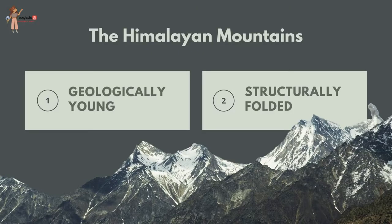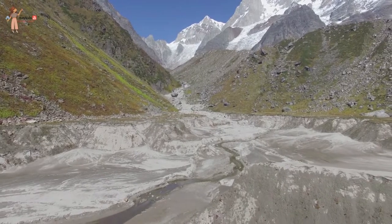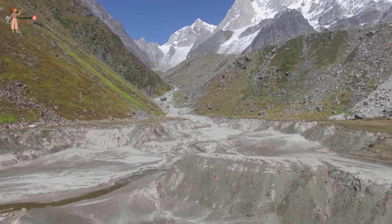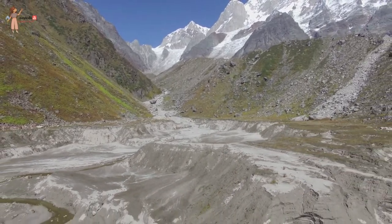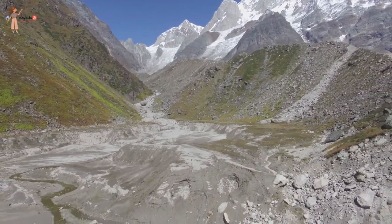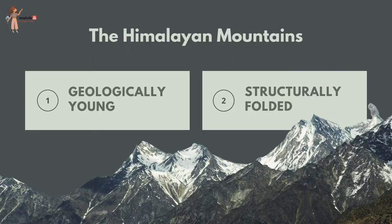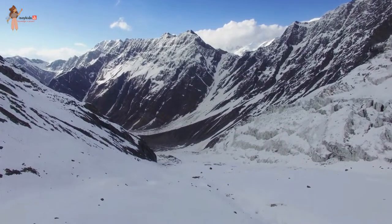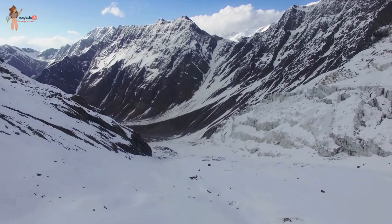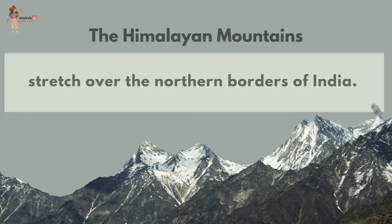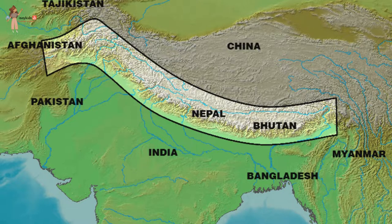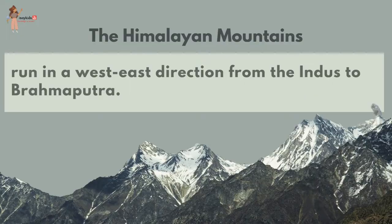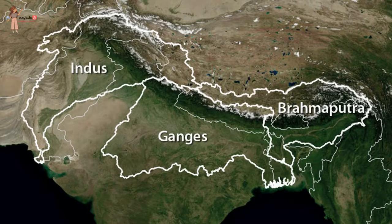The Himalayas are considered geologically young, meaning they are still rugged with very few signs of erosion. These mountains were formed only a few million years ago and are still being uplifted due to tectonic causes. The Himalayas are structurally folded mountains, formed when two or more of Earth's tectonic plates were pushed together. They stretch over the northern borders of India, with mountain ranges running in a west-to-east direction from the Indus to the Brahmaputra.